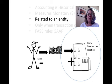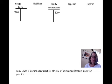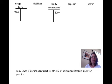I'm going to go through this transaction by transaction and show you how to record these. The first transaction: Larry Owen is starting a law practice. On July 1st, he invested $5,000 in the new law practice. The cash balance went up, so it's an increase or a debit in cash. The equity also increased, meaning there are now owners to this firm, so that increase in equity is a credit entry of $5,000.